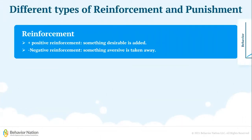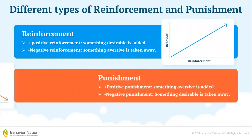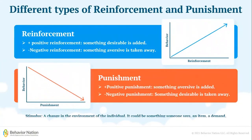There are different types of reinforcement and punishment — there is positive and negative. This may sound a little bit confusing, but think of it like this: when you are having a positive reinforcement or punishment, you are adding something. When you have a negative reinforcement or punishment, you are removing something.